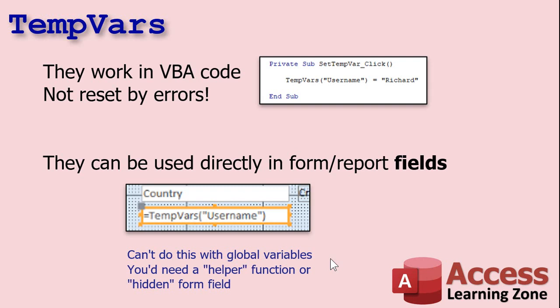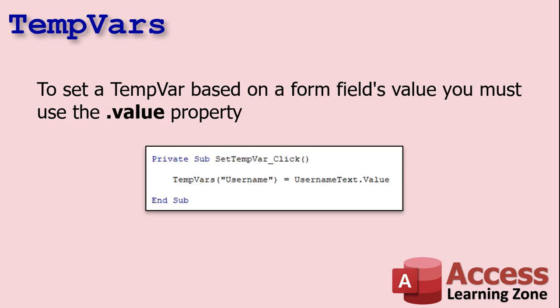TempVars came about in Access 2007, I think — don't quote me. Before that, going back to Access 2.0, we used to have to have a form that you'd open when the database opened, hide it, and save all your values on there. But now TempVars is here. When you set a TempVar as the control source in a text box on a form or report, it's read-only — you can't change it there, you still have to change it with code. But you can use it to display the value, which is handy for reports, or to display a username on a logon form.